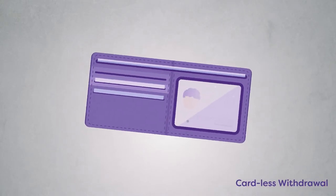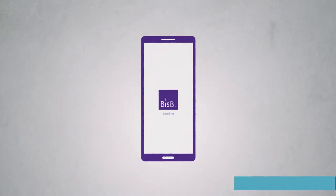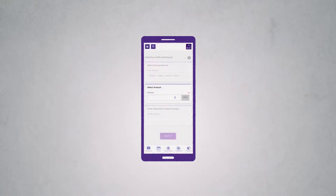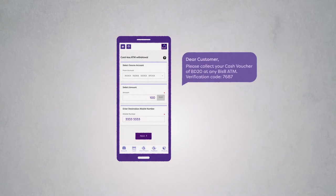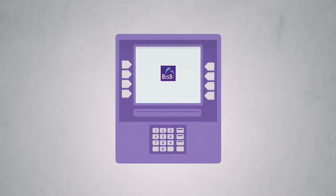Want to make cardless withdrawals? Simply sign in to BISB Digital Services, enter the amount you would like, and you will receive a unique code on your registered mobile number. Enter the code in any BISB ATM and receive your money.